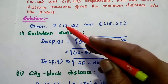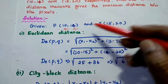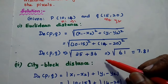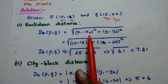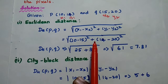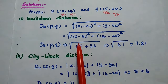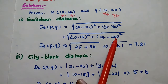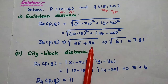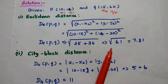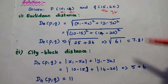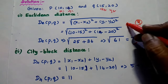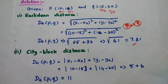In this problem we have two pixel values P and Q with coordinates (10, 14) and (15, 20), where x1=10, y1=14, x2=15, y2=20. First we apply the Euclidean distance formula: square root of (10 minus 15) whole squared plus (14 minus 20) whole squared, which gives square root of 25 plus 36, equals square root of 61, which is 7.81. That is the Euclidean distance between P and Q.